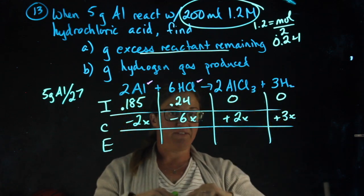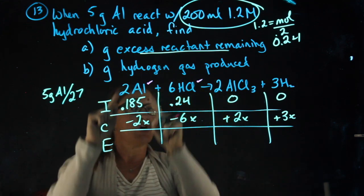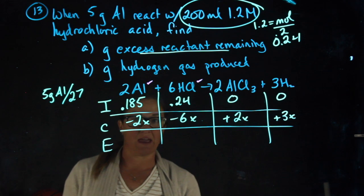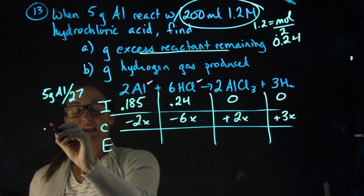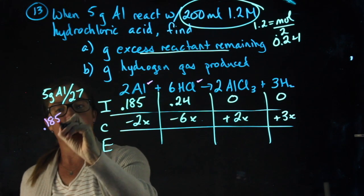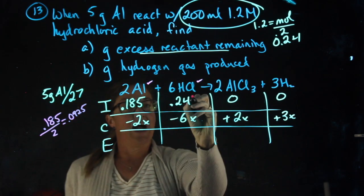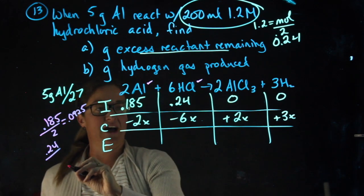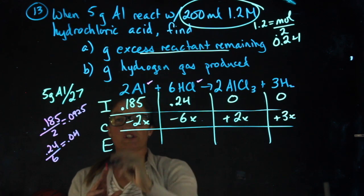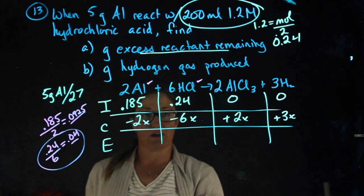The next thing I need to do is figure out which one is my limiting reactant. When I don't have coefficients, it's really easy — I just pick whichever one is smaller. When I do have coefficients, I need to do more thinking. Off to the side, I take the moles of each one — so 0.185 — and I divide by its coefficient. I take HCl's moles and I divide by its coefficient. At that point, whichever one of these two numbers is smaller tells me which one is the limiting reactant.